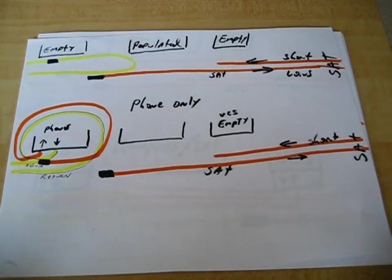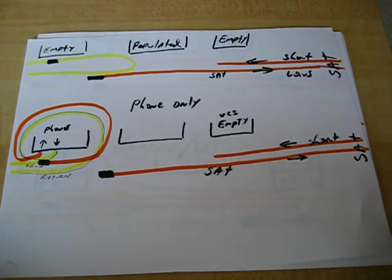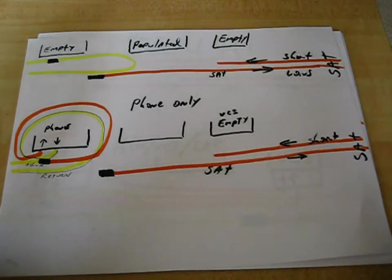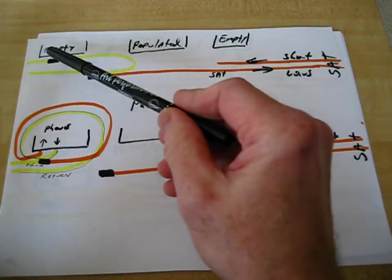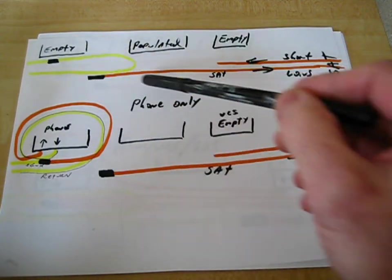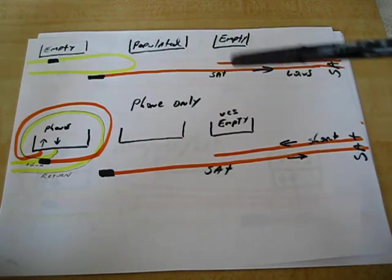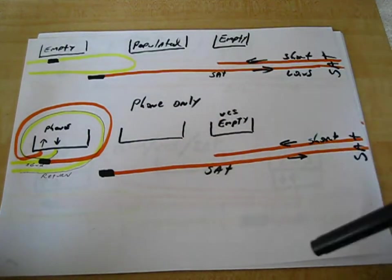The two that I've seen, and they've been a big source of confusion with people, is in the instructions they have you disconnect this loop here, attach one end. They fail to mention that you have to attach the other end.